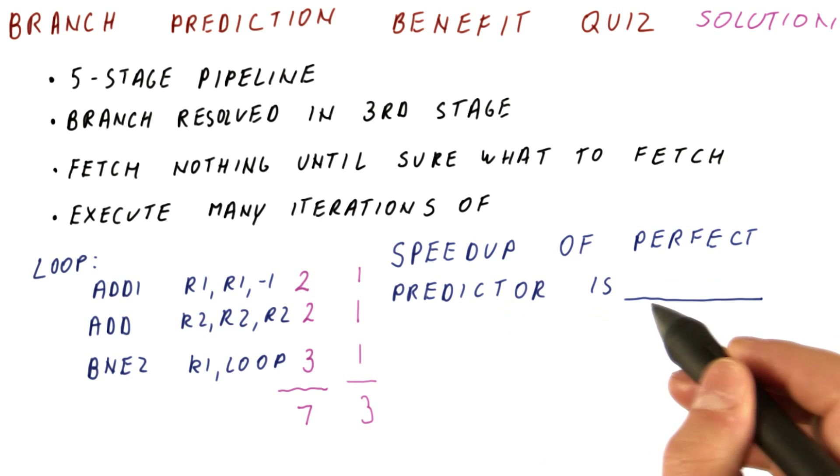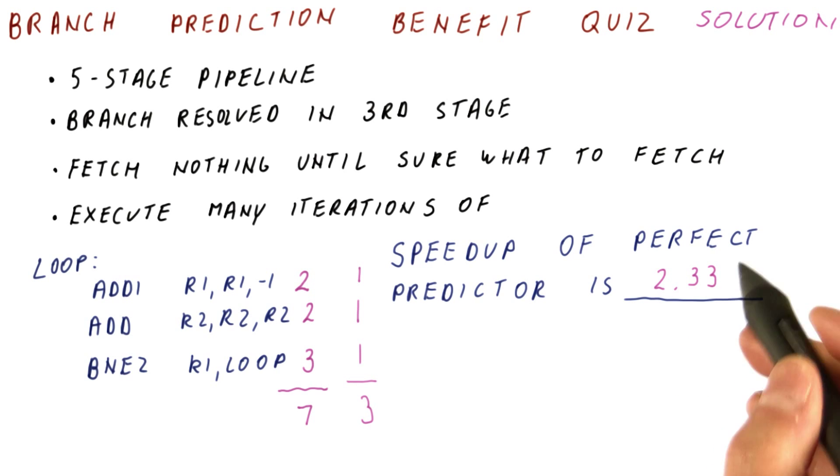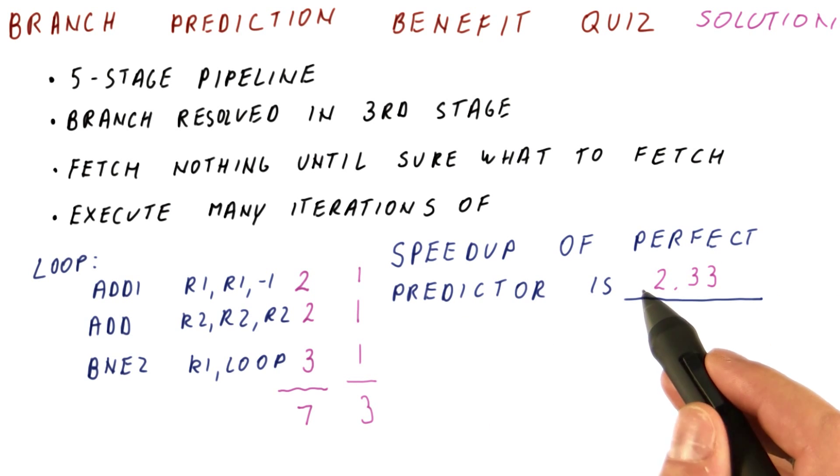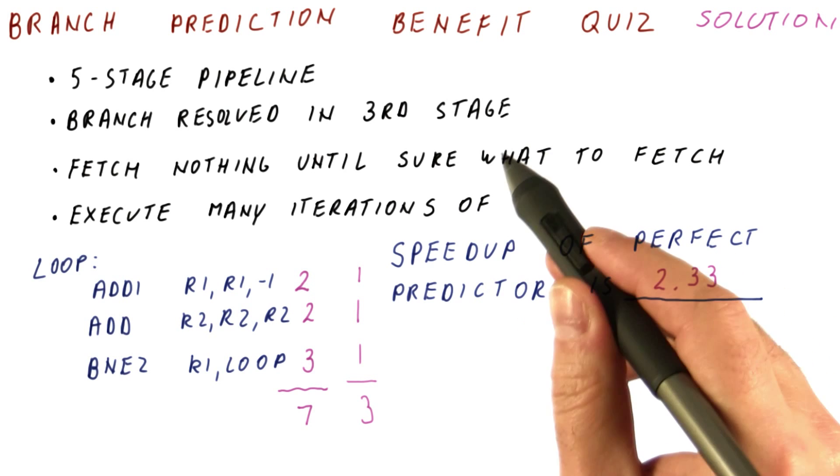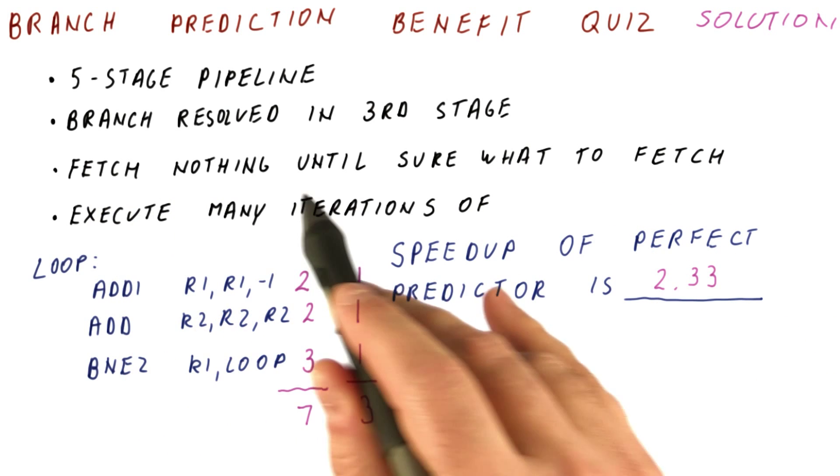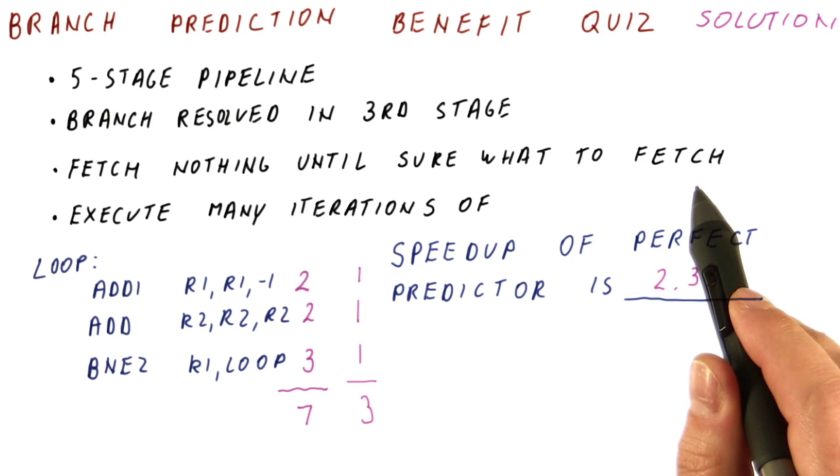So the speedup of having a perfect predictor in this case is seven over three, which is 2.33. So with a perfect predictor, we would have more than twice the performance that we're having when fetching nothing until we are sure what to fetch.